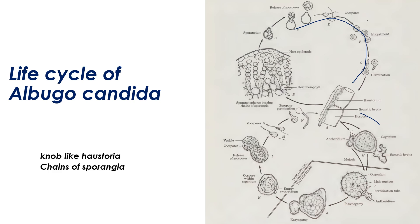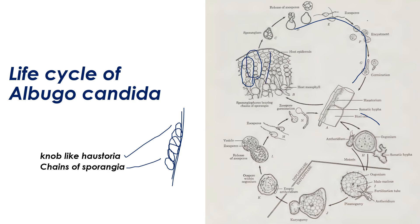A couple of important points: Albugo candida generally produces nob-like cystosori — like a grape bunch. Nob-like cystosori is produced by Albugo candida. You can also observe the chains of sporangia produced here. The production of chains of sporangia is the special feature of Albugo species, and nob-like cystosori is also a special feature. These are two important points to consider in this life cycle.